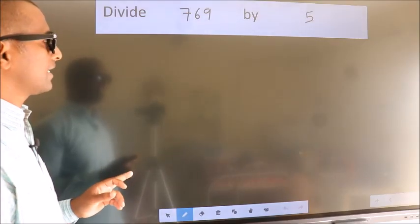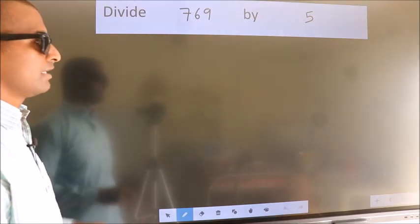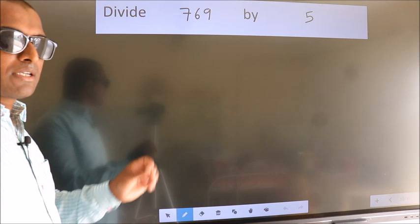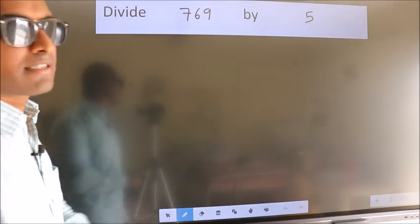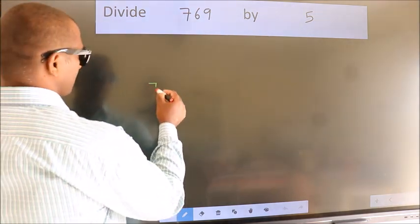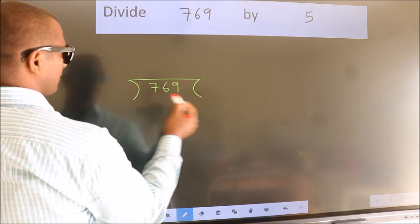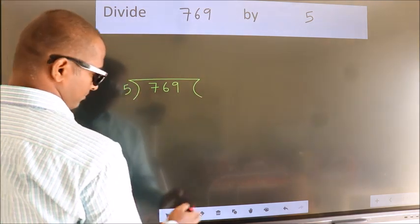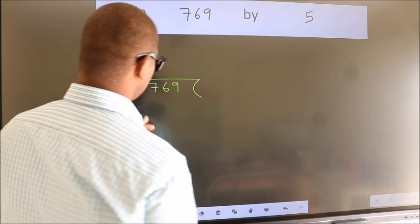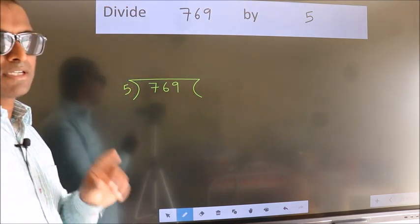Divide 769 by 5. To do this division, we should frame it in this way. 769 here, 5 here. This is your step 1.